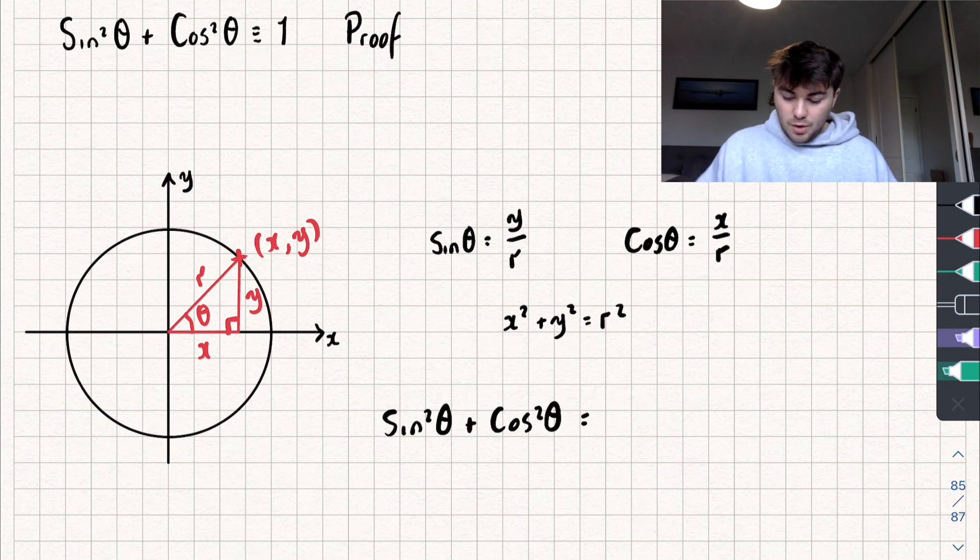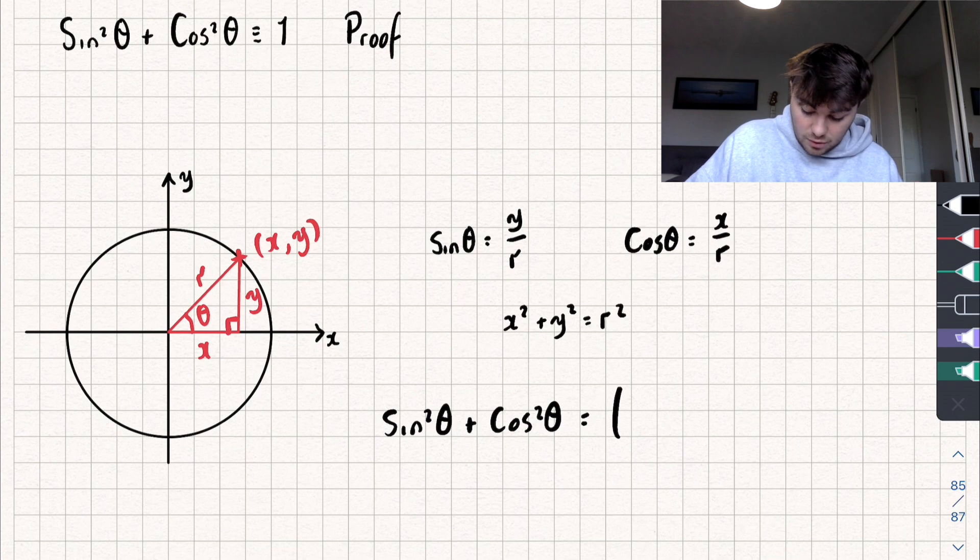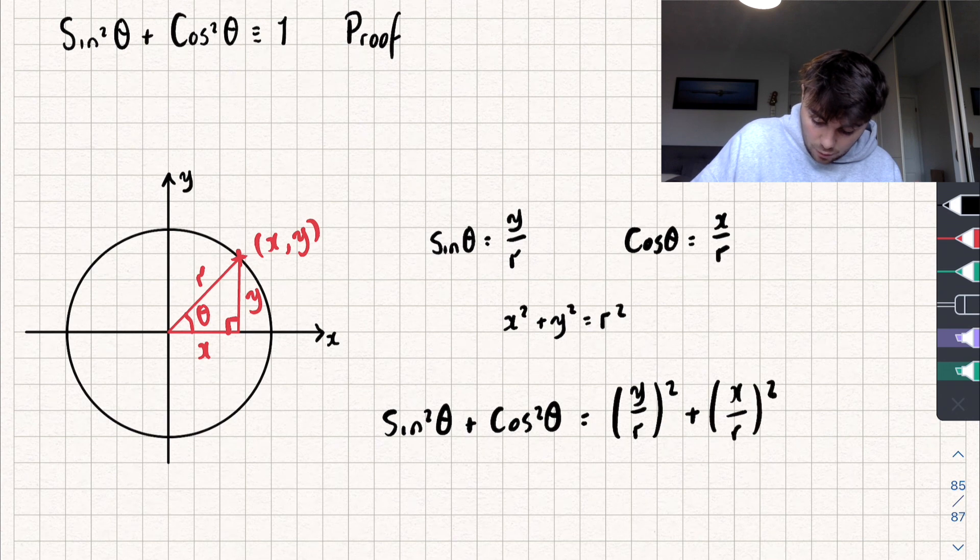Well, what is that equal to? Well, I know that sine theta is equal to y over r and cos theta is equal to x over r. So I could say that sine squared theta plus cos squared theta is equal to y over r all squared plus x over r all squared like so.